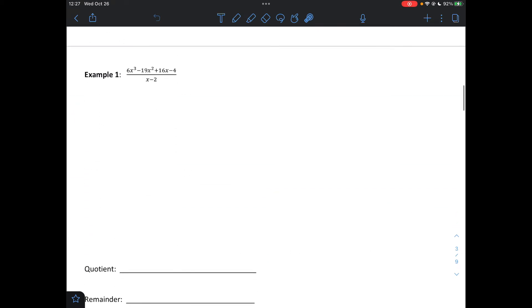Okay. So let's take a look at our first example. x minus 2 is going to go into 6x cubed minus 19x squared plus 16x minus 4. When we do long division, first of all, very important here, if there's any terms that are missing, you'll have to fill them in with a 0.